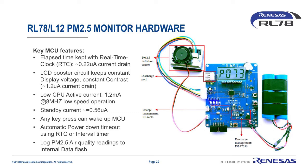This solution is realized by RL78L12's functions such as I/O ports, A-to-D converter, buzzer, LCD controller, and stop mode — best suited for small home appliances. In addition, the ISL97656 DC-to-DC boost converter controls battery discharge, and the ISL6294 battery charger IC can control battery charging.